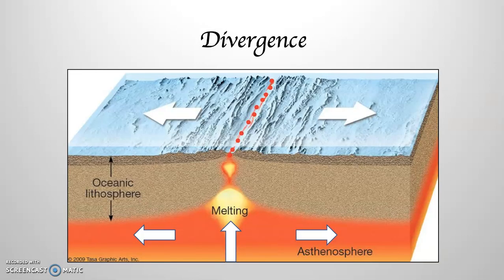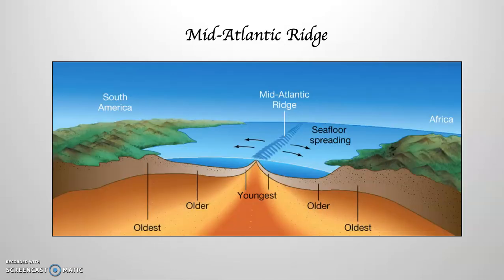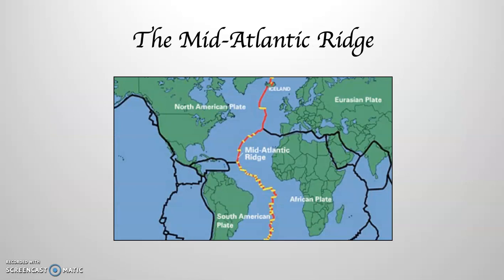This is what a divergent plate boundary looks like, where there are convecting currents within the asthenosphere, and the crust rides on top of those convecting currents. Where the convecting currents pull apart, that creates divergence — in other words, the crust rips apart, as you can see happening there in the oceanic crust. The most obvious place this happens is the mid-Atlantic ridge, which runs right through the middle of the Atlantic Ocean and mirrors the east coast of South America and the west coast of Africa. Here it is right here.